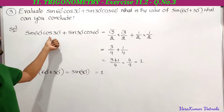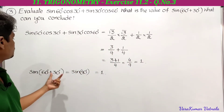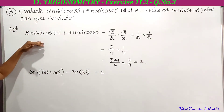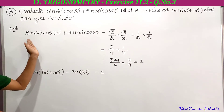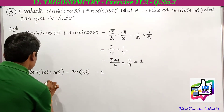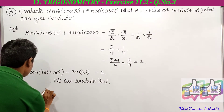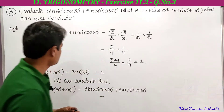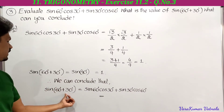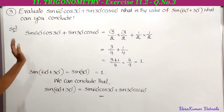So we observe that sine 60 cos 30 plus sine 30 cos 60 equals 1, and sine of 60 plus 30 is also equal to 1. Therefore, we can conclude that sine of (60 + 30) degrees is equal to sine 60 cos 30 plus sine 30 cos 60. This is the third problem in Exercise 11.2.